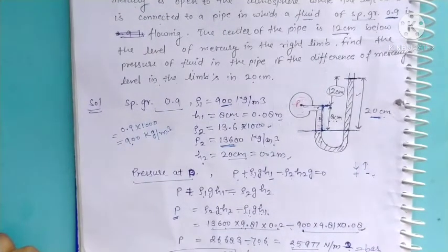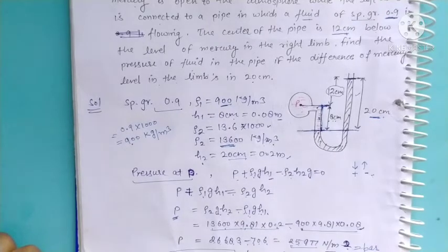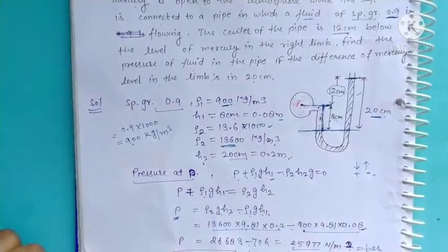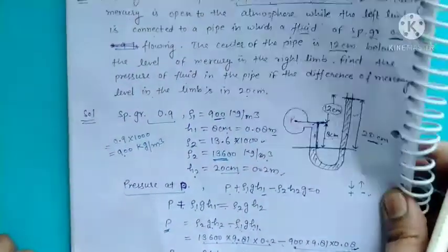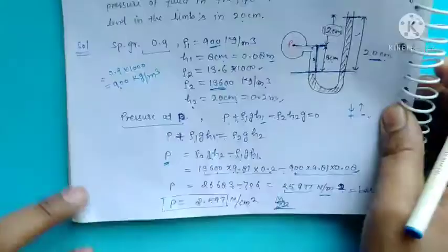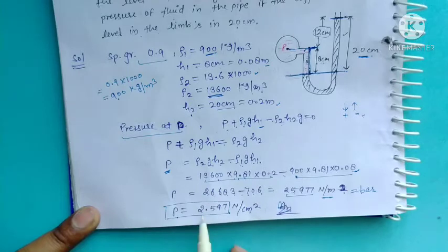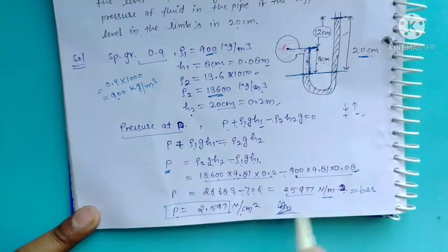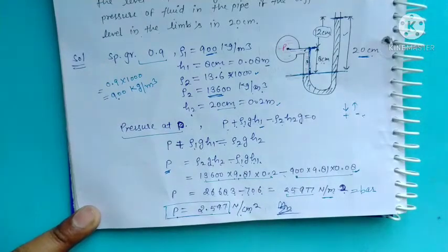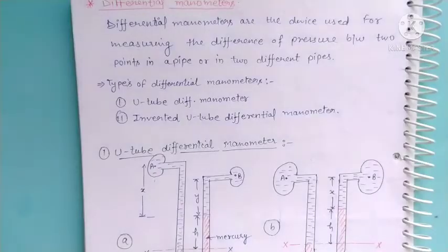Solving the equation, we get P = 2.597 Newton per centimeter square. This is the pressure of the fluid in the left limb. Now let's move to the next topic: differential manometer.